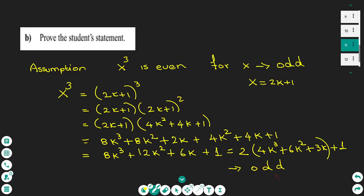So we arrived at a contradiction — x cubed is odd, not even. Therefore the opposite is true, and the original statement is confirmed: if x to the power of three is even, then x is even.